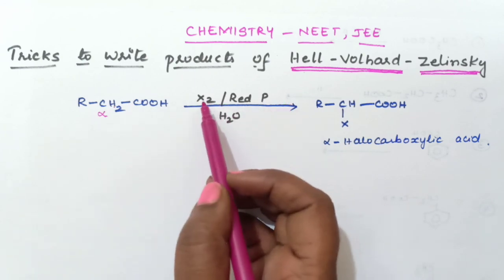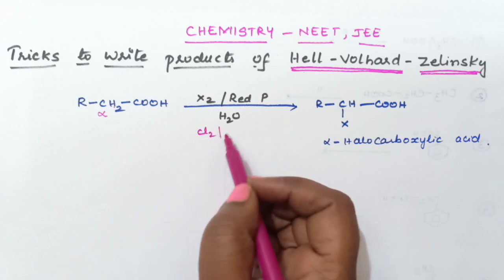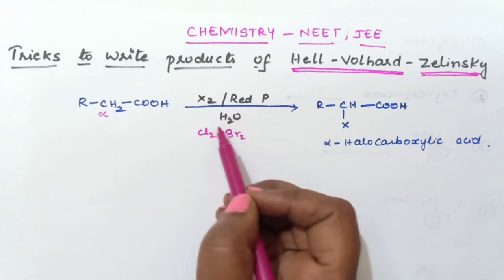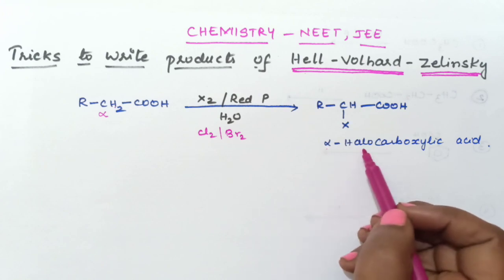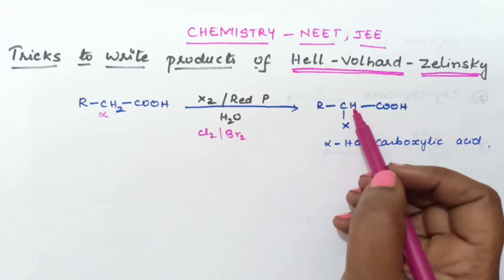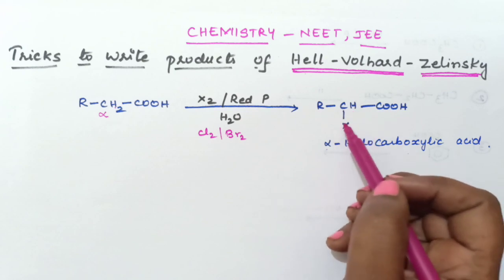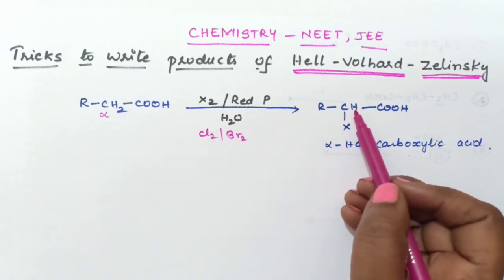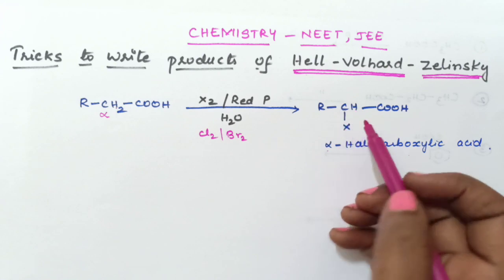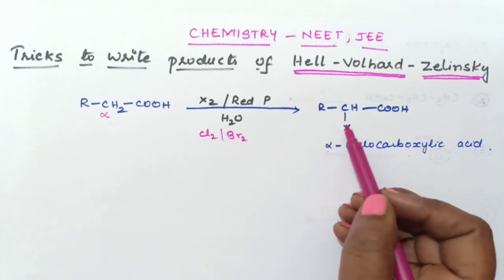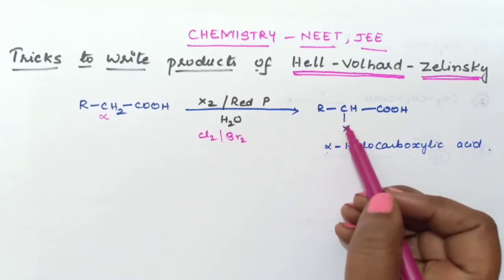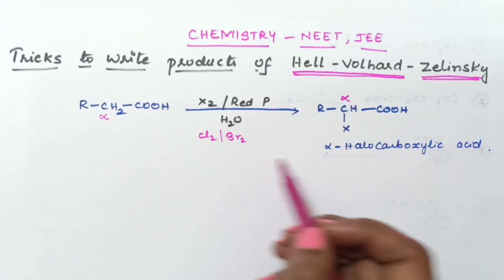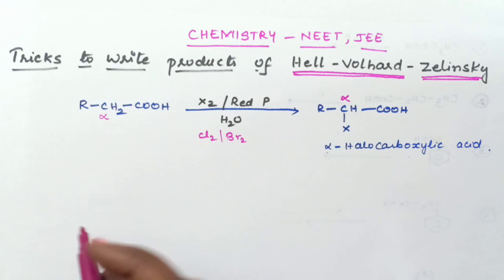We treat the acid with a halogen — chlorine or bromine — in the presence of red phosphorus, and then hydrolyze the product. The product obtained is an alpha-halocarboxylic acid, where one alpha hydrogen is replaced by the halogen. If chlorine is used, Cl is attached; if bromine is used, Br is attached to the alpha carbon.